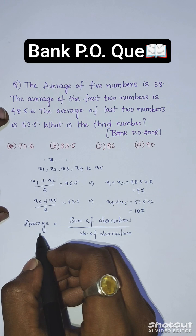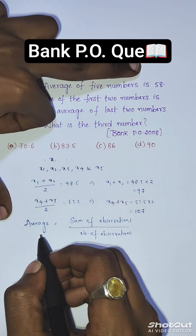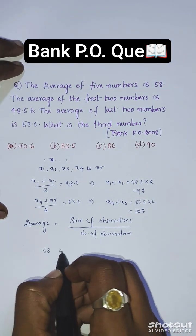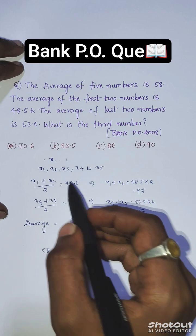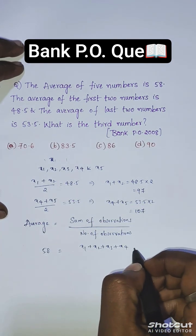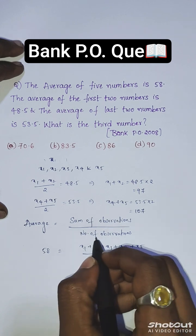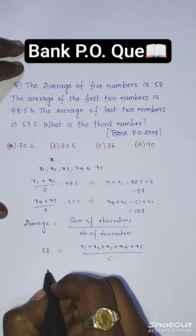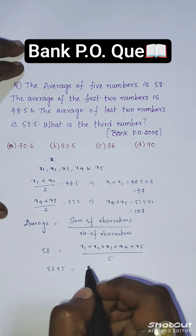The average of five numbers is 58, so 58 equals the sum of all the numbers (x1 + x2 + x3 + x4 + x5) divided by 5. Therefore, 58 × 5 equals the sum.